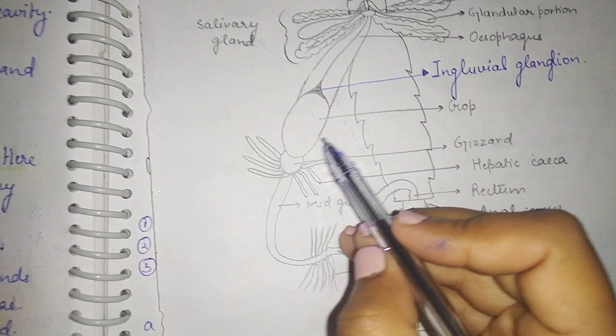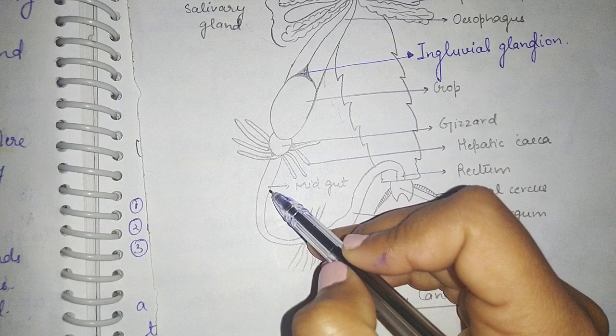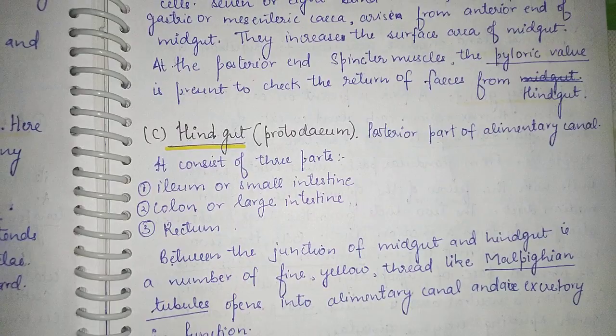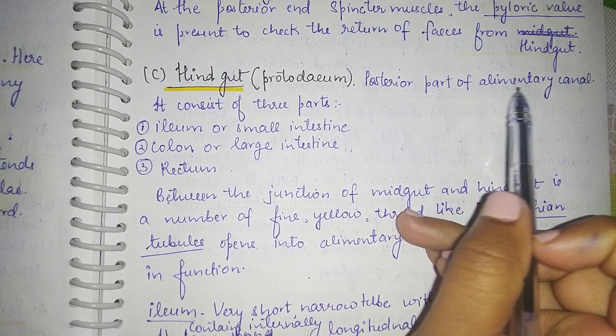At the posterior end of the midgut, sphincter muscles form the pyloric valve, which checks the return of feces from the hindgut into the midgut. So we have the stomodeal valve between the gizzard and midgut, and the pyloric valve between the midgut and hindgut.